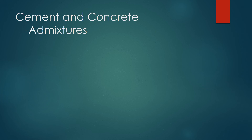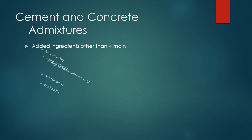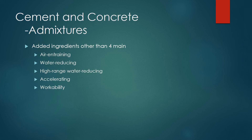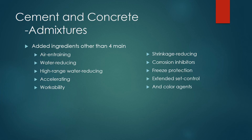Admixtures can also be added to concrete. Admixtures are mixed ingredients other than the four main ingredients, and they're used to alter properties in many different ways. Air entraining, water reducing, high range water reducing, accelerating, workability, shrinkage reducing, corrosion inhibitors, freeze protection, extended set control, and color agents are all admixtures.